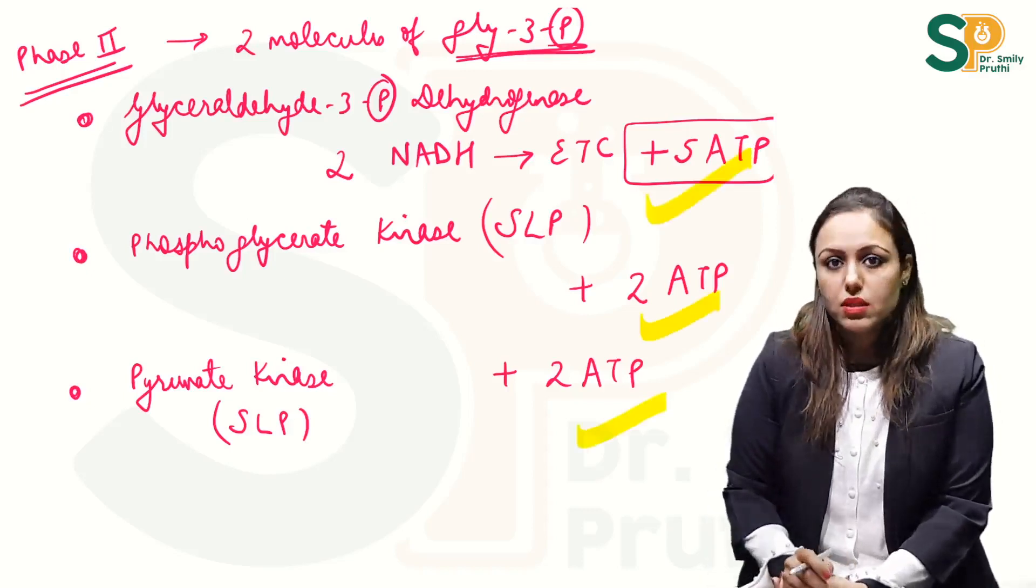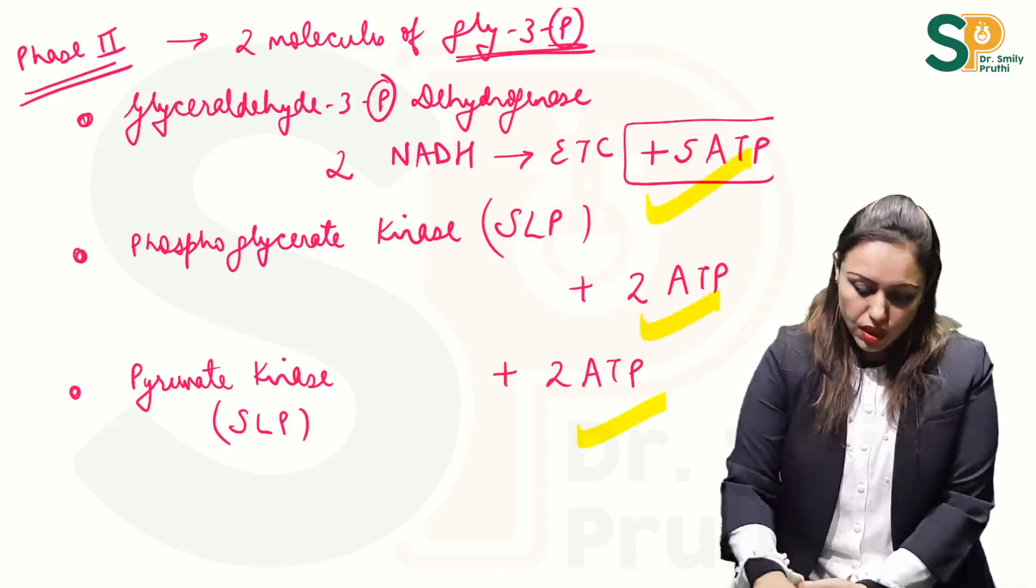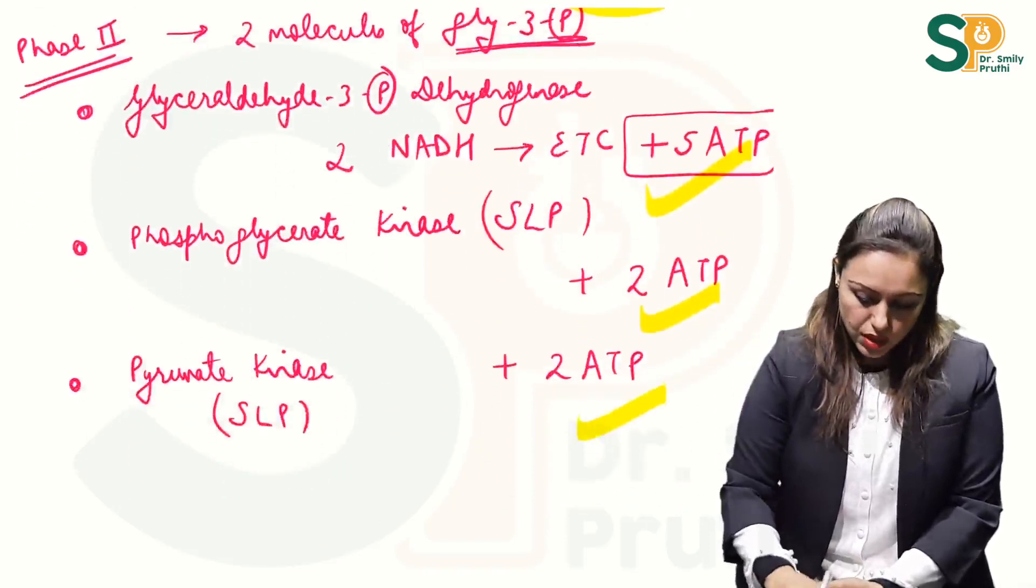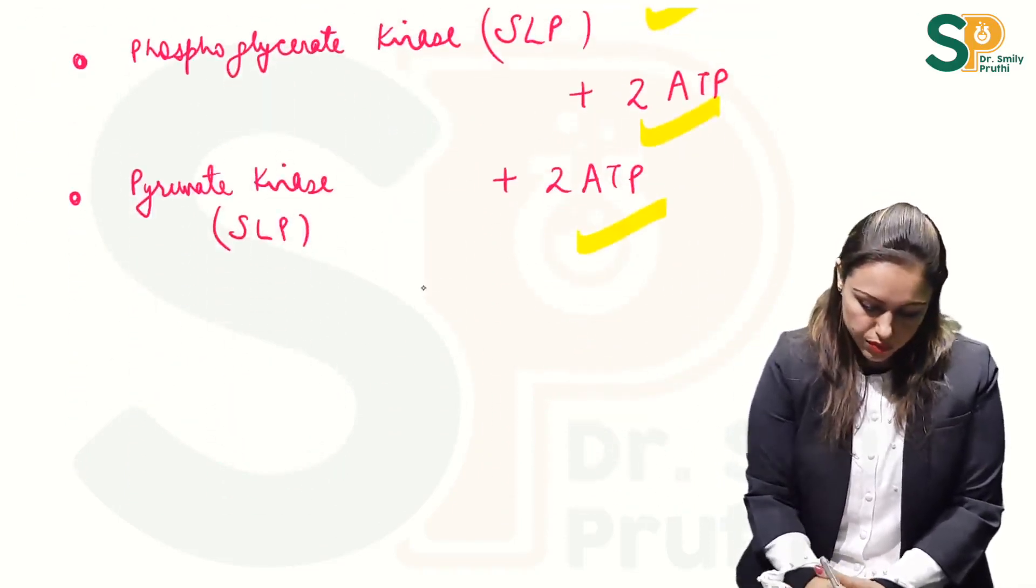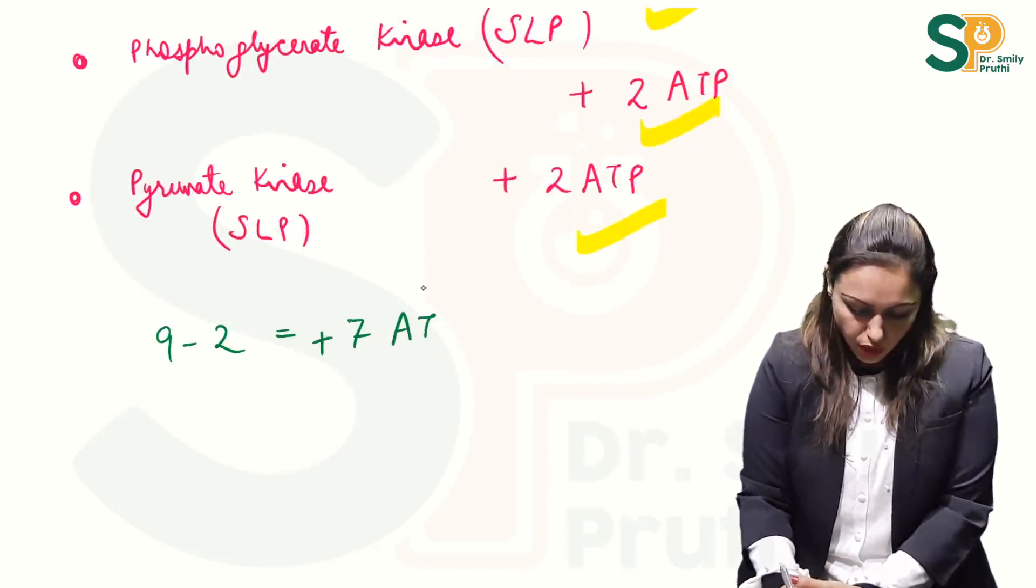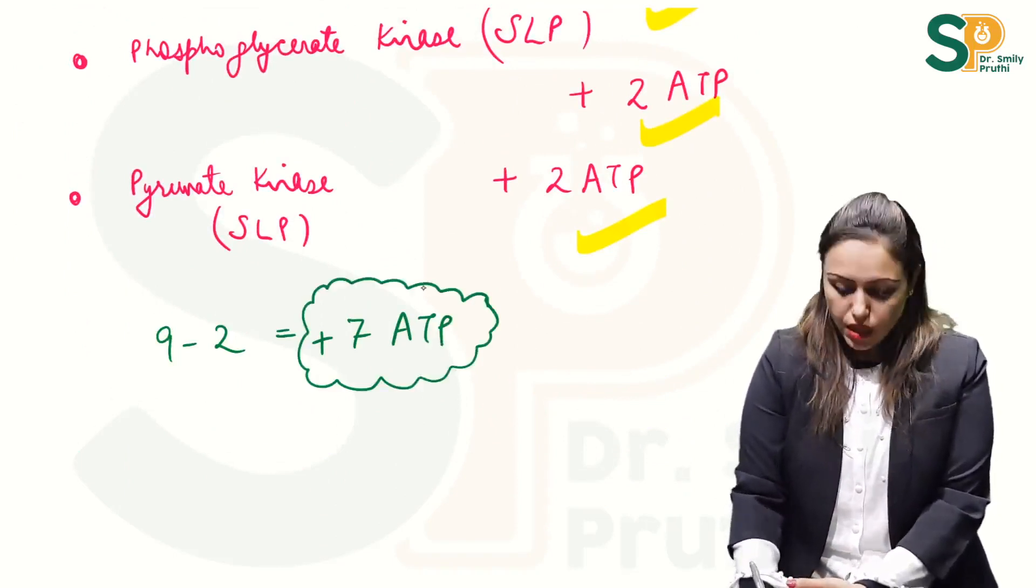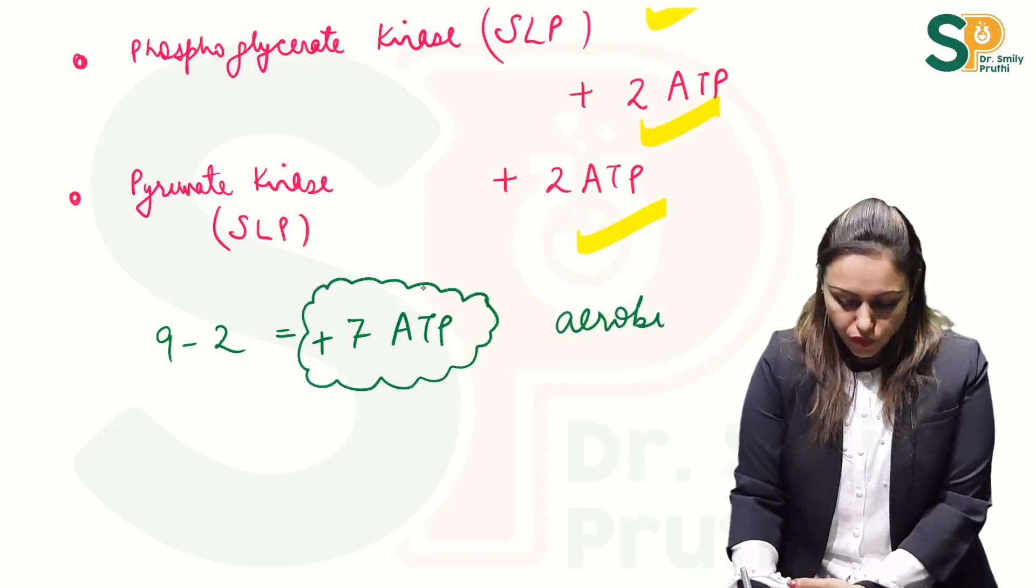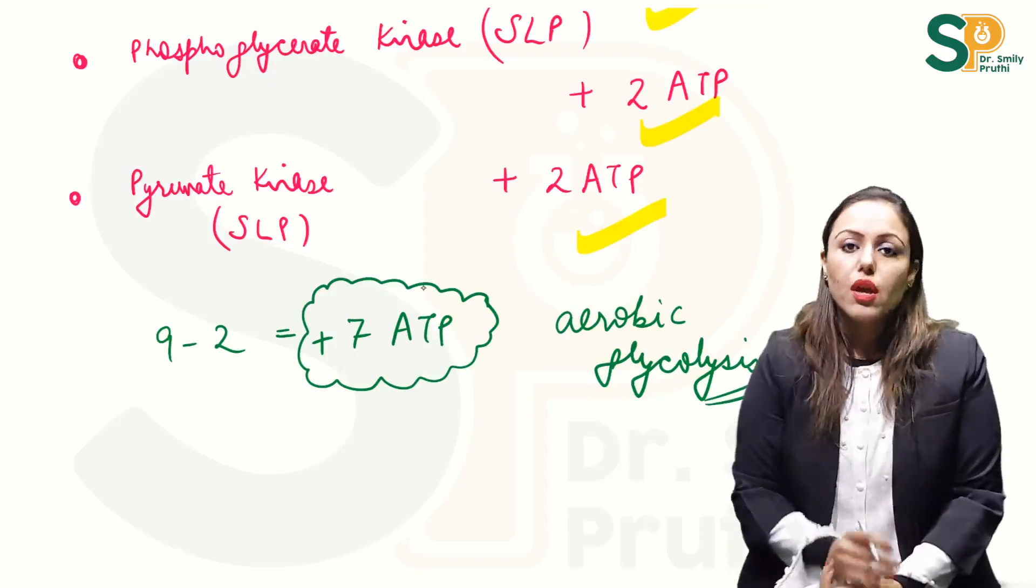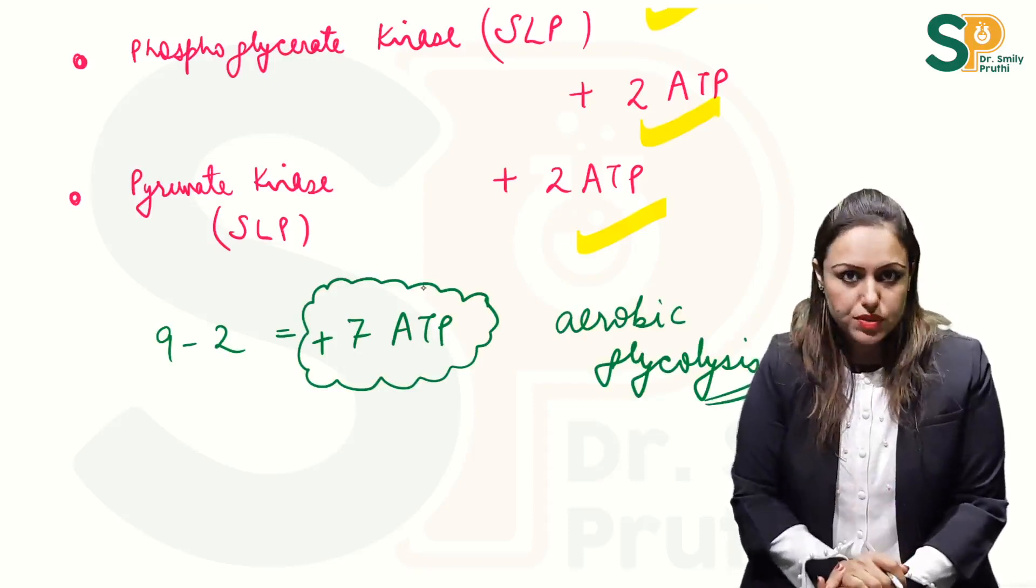So let's do the total counting here now. Plus 5 plus 2 plus 2 and this is 9 ATPs. 9 minus 2 ATPs, so 9 minus 2. Therefore the energetics of glycolysis is plus 7 ATPs and this is for aerobic glycolysis. For aerobic glycolysis we are getting 7 ATPs.